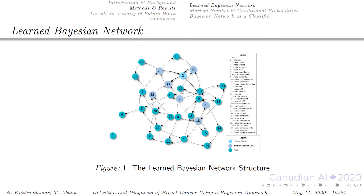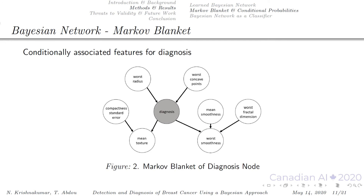Here is our learned Bayesian network using the data. The node labeled 2 is the diagnosis target node and the bluish-gray nodes are the conditionally associated features which make up the Markov blanket. Taking a closer look at the Markov blanket, we find the features diagnosis is conditionally associated with. These include its parents — worst radius and worst concave points — its spouses — compactness standard error, mean smoothness and worst fractal dimension — and its children — mean texture and worst smoothness. The Markov blanket was checked and there were no false positives.